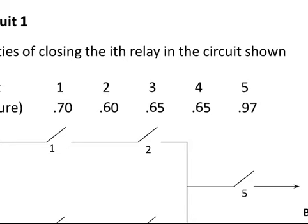Let's look at our example. What we have here is a circuit with components 1, 2, 3, 4, and 5, all joined together. They are essentially relays, part of a broader network that goes between A and B. The probability of each circuit being closed is as follows: the probability that circuit 1 is closed and allowing current to flow is 0.70, the probability that circuit 2 is closed is 0.60, and so on. If all the relay circuits function independently, what is the probability that a current flows between A and B?